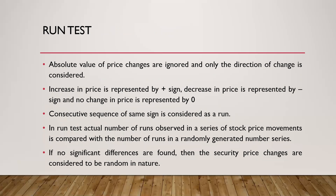The second test is the run test. In the serial correlation test, we calculated the absolute price change. But under the run test, we are not concerned about the absolute value — we are only concerned about the direction of the change. We do not want to know whether the price came from 55 to 50 to 42; what we want to know is the direction. If there was an increase in price, it will be represented by a positive sign. If there was a decrease, it will be represented as a negative sign. If there is no change, it is represented by zero.